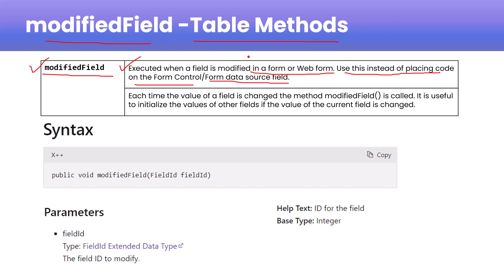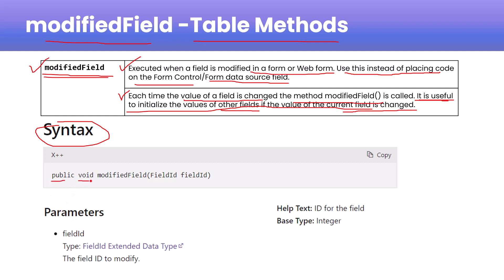If a particular field is actually changing its value, the modifiedField method will be called every time. Each time the value of a field is changed, the modifiedField method is called. It is also useful to initialize the value of other fields if the value of the current field is changed. Now let's look at the syntax: this is a public method, the return type is void, and it takes a fieldId parameter.